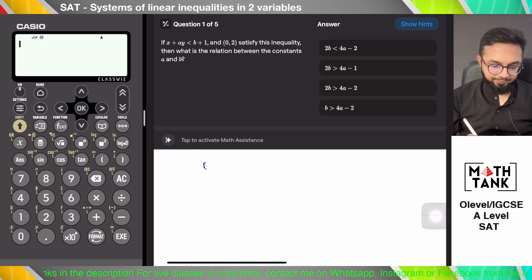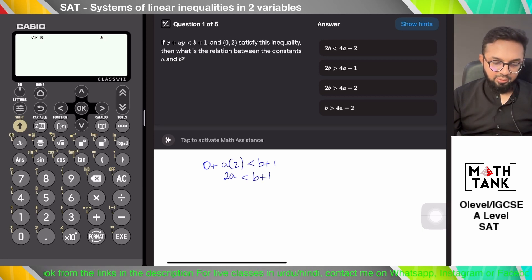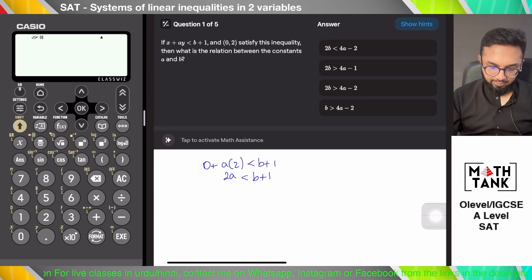So 0 plus a times 2 is less than b plus 1. So 2a is less than b plus 1. What is the relationship between the constants a and b? 2a is less than b plus 1.